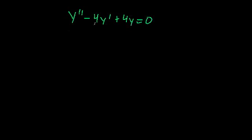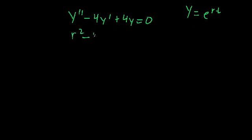Let's take a look at this. This is second order, it's linear, it's homogeneous, and it has constant coefficients. So let's try out this age-old solution: y is equal to e raised to the rt. If we plug that in and take the derivatives, we'll recover the characteristic equation: r squared minus 4r plus 4 is equal to 0.